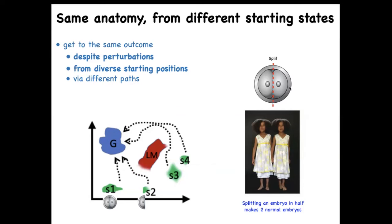For example, when you take an early embryo and cut it into halves or quarters, you don't get two half-bodies — you get two perfectly normal monozygotic twins, because each half can recognize that the other half is missing and rebuild what it needs. You can think of embryonic development as regeneration of the entire body from just one cell. Different systems navigate this space to reach the ensemble of goal states we associate with normal target morphology, often avoiding local maxima that would trap a less intelligent system.